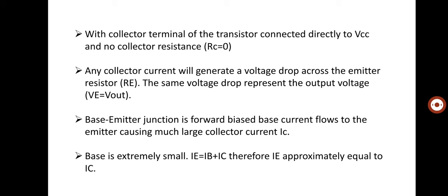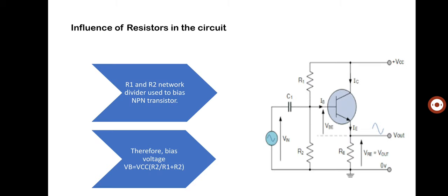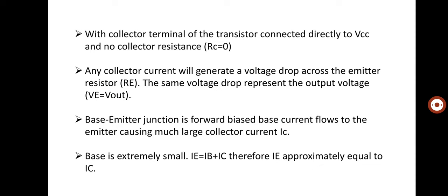Any collector current will generate a voltage drop across the emitter resistor RE. This same voltage drop represents the output voltage, so VE is equal to V output. The IC current passes through to IE — the emitter current — and this voltage drop is equal to the output voltage drop. Therefore, emitter voltage is equal to the output voltage.